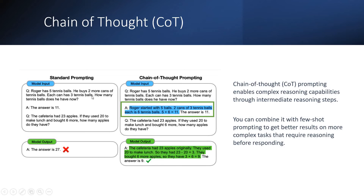In standard prompting: 'Roger has 5 tennis balls. He buys 2 more cans of tennis balls. Each can has 3 tennis balls. How many tennis balls does he have now?' The answer is 11. Now I throw the next question in standard prompting format: 'The cafeteria had 23 apples. If they used 20 to make lunch and bought 6 more, how many apples do they have?' The result comes back as 27, which is actually wrong.